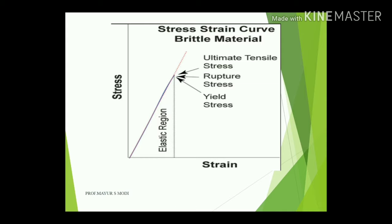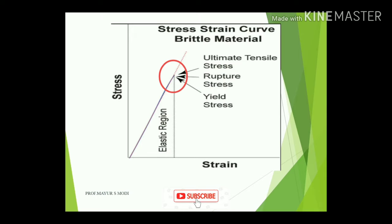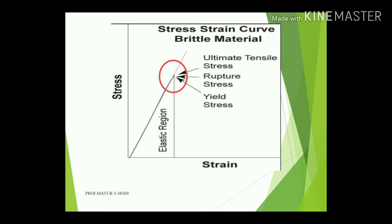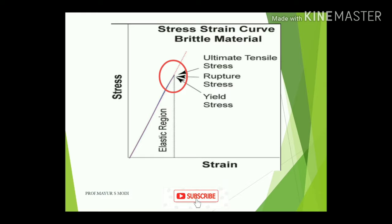For brittle materials, the x-axis similarly represents strain and the y-axis represents stress, but the curve is just a straight line. There is little or no elastic region — the yield point, rupture point, and ultimate tensile stress are essentially the same point. After application of stress, brittle materials fail suddenly with no fighting behavior, unlike ductile materials which are considered fighting materials in engineering.